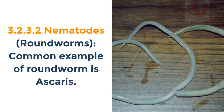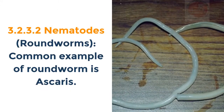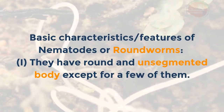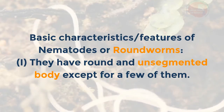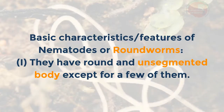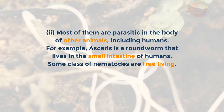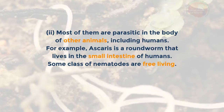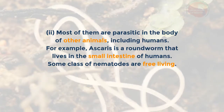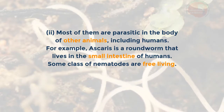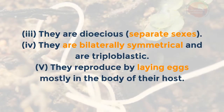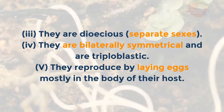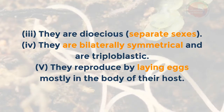Nematoda — roundworms. A common example is Ascaris. Basic characteristics: i. They have a round and unsegmented body, except for a few. ii. Most are parasitic in the bodies of other animals including humans — e.g. Ascaris lives in the small intestine. Some nematodes are free-living. iii. They are dioecious (separate sexes). iv. They are bilaterally symmetrical and triploblastic. v. They reproduce by laying eggs, mostly in the body of their host.